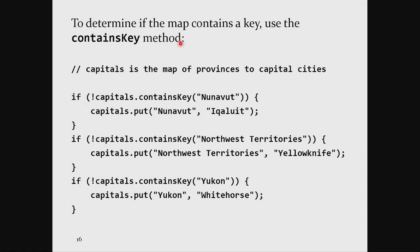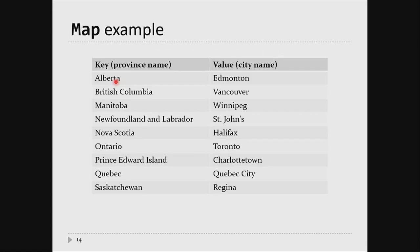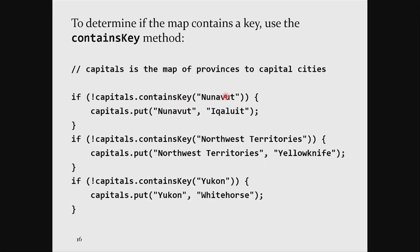Sometimes you want to check if a key is in the map — there's a containsKey method for that. In our capitals map, if you notice we left out all of the territories. So we check: is Nunavut in the map as a key? If not, we add Nunavut and its capital. We do the same for Northwest Territories — if it doesn't contain that key, we put Yellowknife in as the capital city — and the same for Yukon.